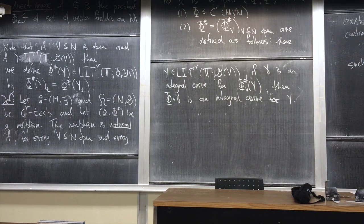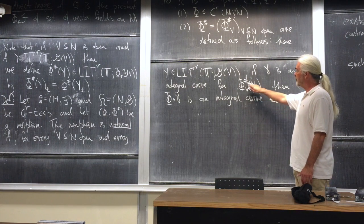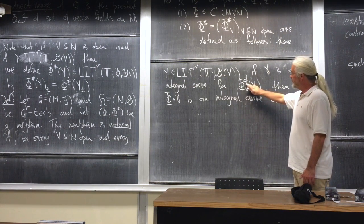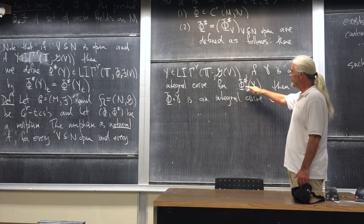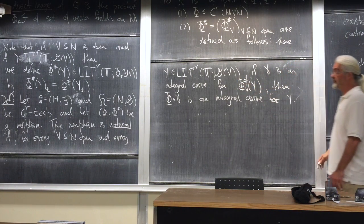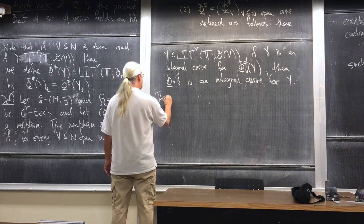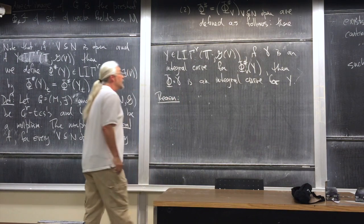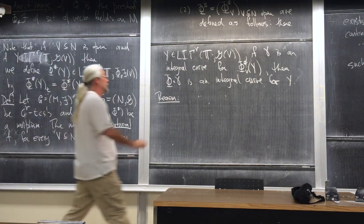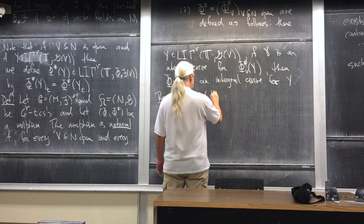What you would like to be true, and what is true, is that this naturality condition — just about trajectories mapping to trajectories — tells you something about the form of these mappings phi-sharp. In fact, what you'd hope is that phi-sharp is essentially just the derivative of phi, and that turns out to be the case.